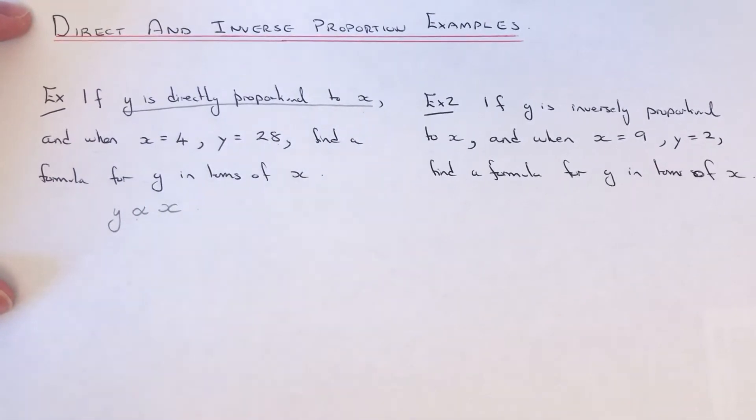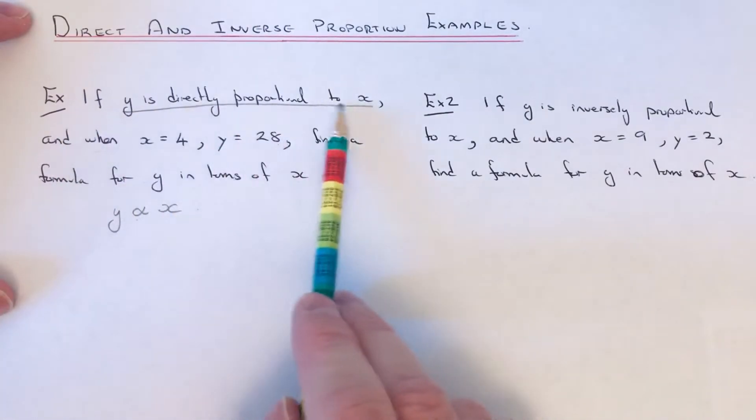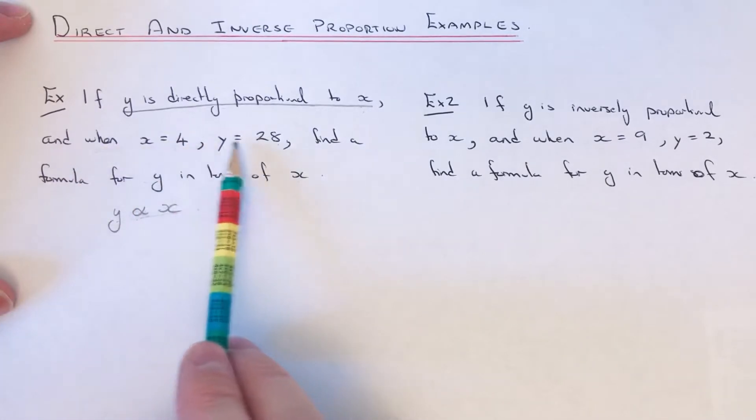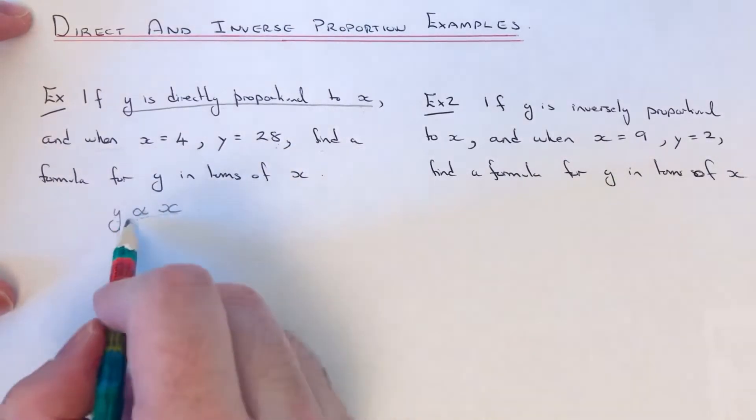So let's have a look at example 1. We've got y is directly proportional to x, which you can write down like this, with this symbol which looks a bit like a fish. And when x equals 4, y equals 28, find the formula for y in terms of x. So what we do next is turn this into a formula.